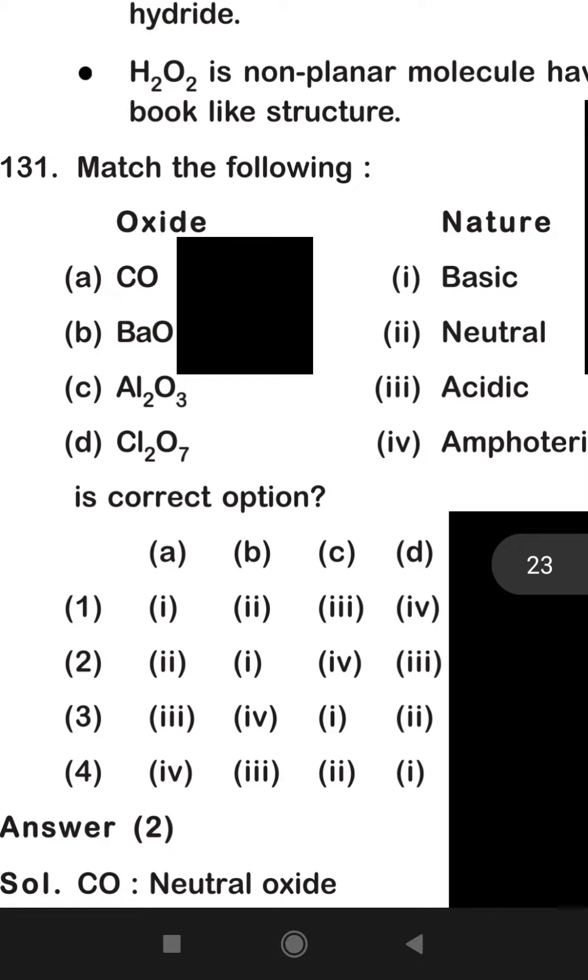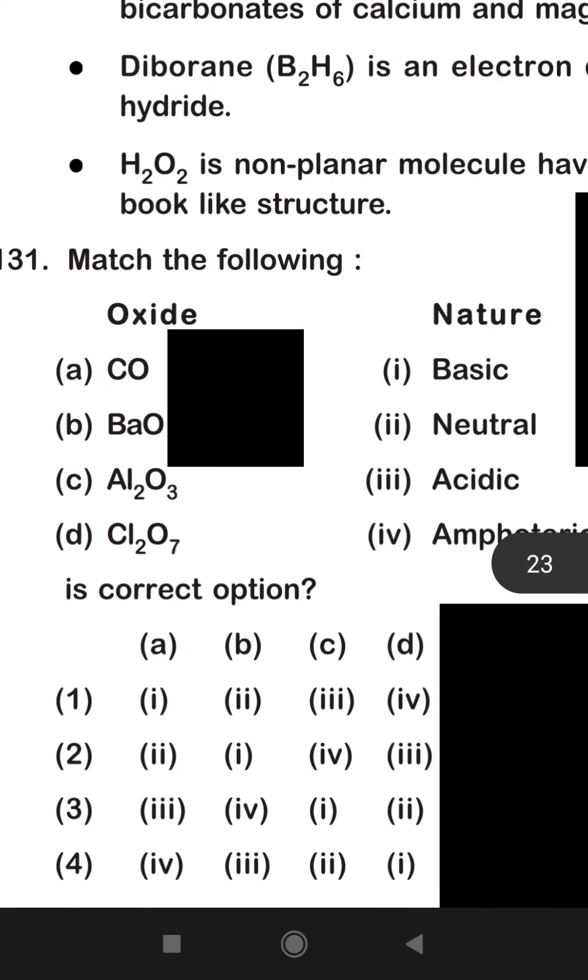Oxides and hydroxides of all metals are basic in nature except aluminium. Barium oxide is basic in nature, aluminium is amphoteric, and Cl2O7 is acidic in nature because both are non-metals. So its answer will be second.